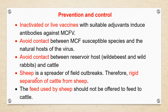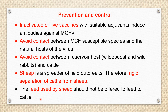We know that sheep is a spreader in field outbreaks, so there should be rigid separation of cattle from sheep to prevent transmission. Also avoid feed used by sheep — any leftover feed from sheep should not be offered to cattle, to avoid the spread of the disease. The important steps are: avoid contact between reservoir hosts and cattle, separate cattle from sheep, and do not offer sheep feed to cattle.